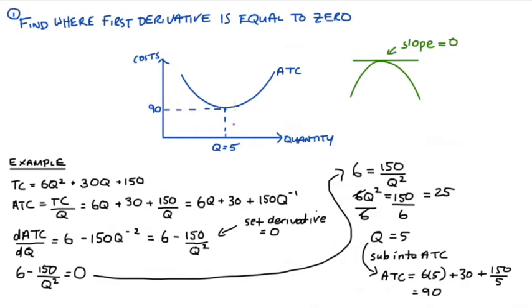Now the second derivative tells us about the slope of the slope. So how our slope is trending, whether it will slope upwards as q increases, in which case we have a minimum, or downwards as q increases, in which case we have a maximum. So we need the second derivative evaluated at q is equal to 5 to be positive.